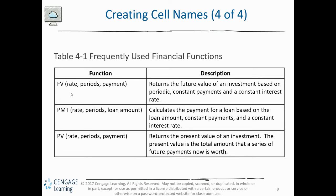The frequently used financial functions are: FV (future value), which returns the future value of an investment; PMT, which calculates the payment for a loan based on the loan amount, constant payment, and constant interest rate — where you enter the rate (interest rate), the number of periods, and the loan amount; and PV (present value), which returns the present value of an investment — the total amount that a series of future payments is worth now.